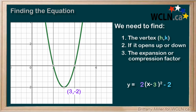So, the equation of the mystery parabola is 2(x minus 3) squared minus 2.